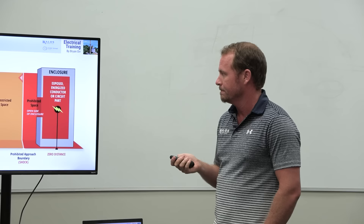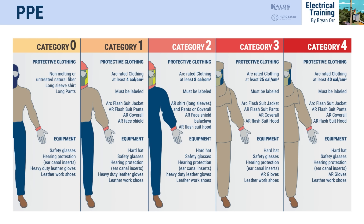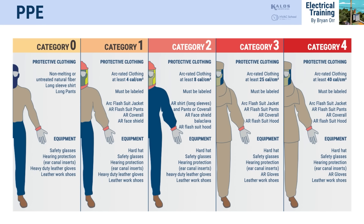You have to assess what boundaries are restricted and what gear you need to be wearing. Most of our work falls in Category 1 to Category 3. At a minimum when working electrically in motor rooms, you should be wearing long sleeves, gloves, safety glasses, and non-conductive boots.